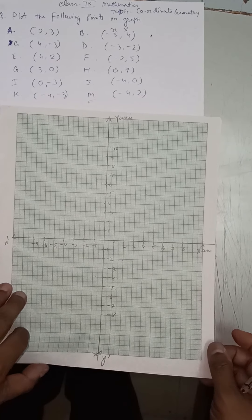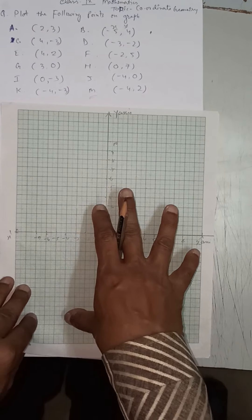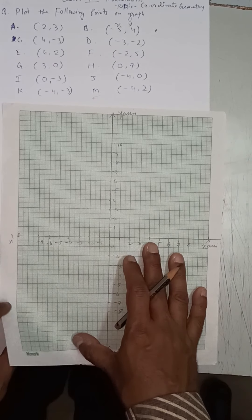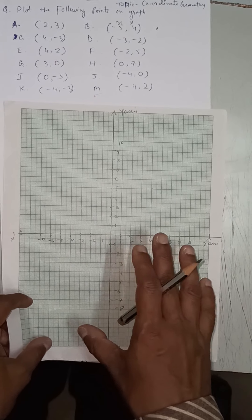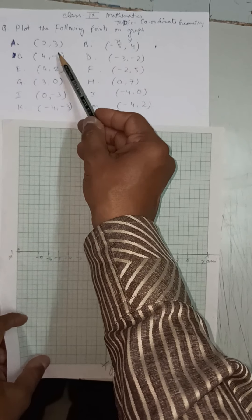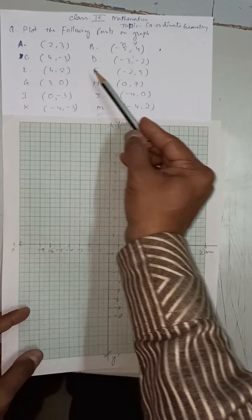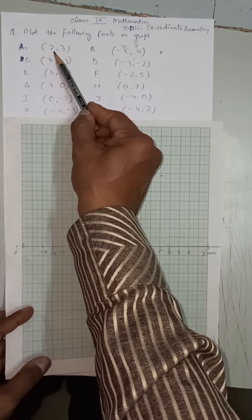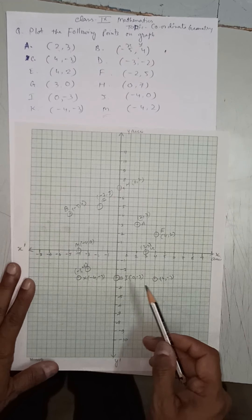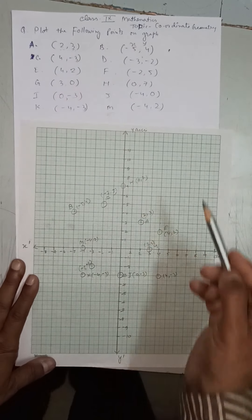After drawing and labeling the axes, we have prepared the graph. Now we plot these points. The first value in each coordinate is x and the second is y. X is called the abscissa and y is called the ordinate.